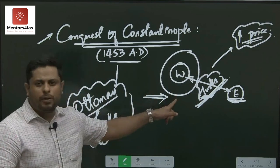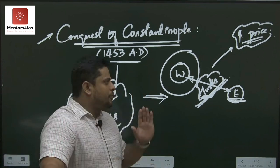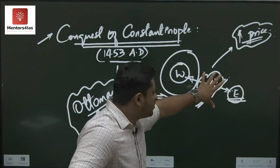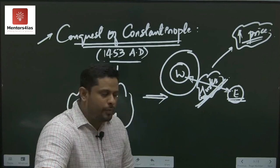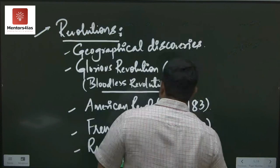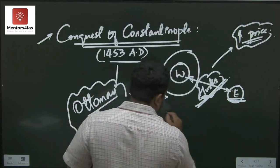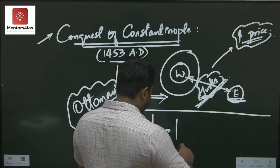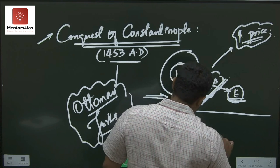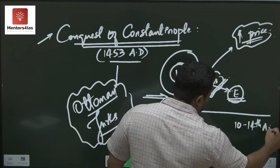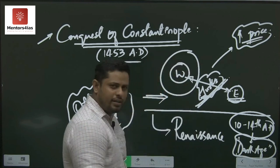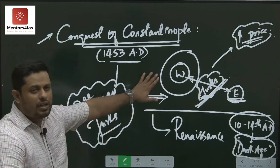The Ottoman Turks capturing Constantinople increased the price of commodities. This was not feasible or acceptable to the European community at that point in time because spices were something their existence depended upon. Naturally, they had to find some alternative solution, since the enhanced prices of commodities were something they could not sustain for a very long period. Emerging out of this phase, there would be emphasis on rationality and geographical discoveries — what we call the Renaissance. Europe was under what we call the Dark Age from the 10th to 14th century — an era of superstition and irrationality.